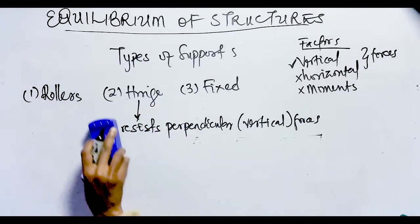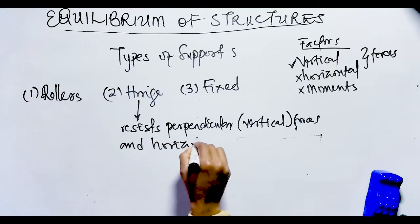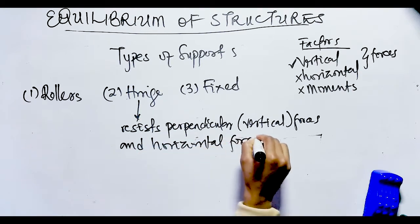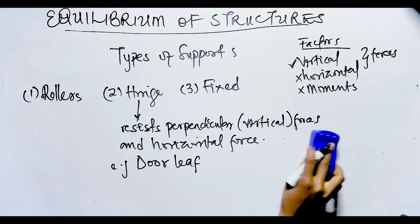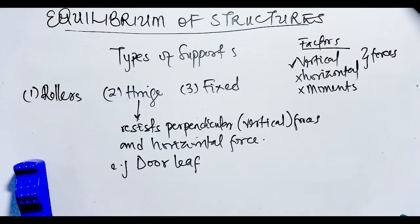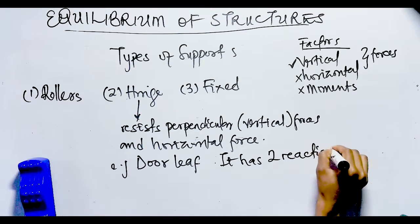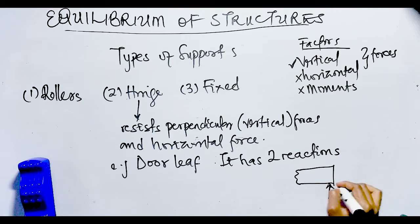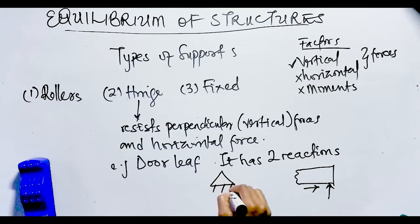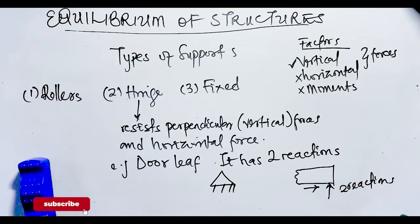Moving on, we have hinge supports. The hinge support resists both vertical and horizontal forces but cannot resist moments. A typical example is a door leaf — a door leaf can only move clockwise and anti-clockwise; it cannot move horizontally or vertically. Since a hinge can resist vertical and horizontal forces, it has two reactions: a reaction in the vertical component and a reaction in the horizontal component. These are the diagrams used to represent hinges.